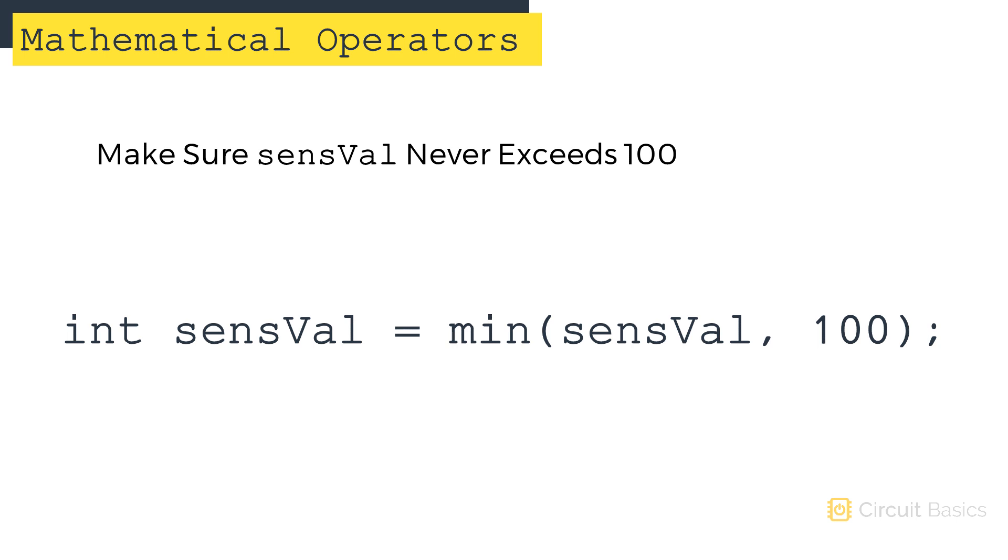For example, say you want to make sure the reading from a temperature sensor never exceeds 100 degrees. You could use the min function like this. This stores the smaller of the two numbers in the variable sensorval. So if sensor value exceeds 100, the function will output 100.